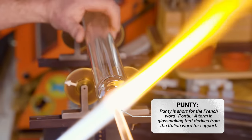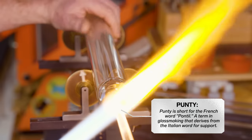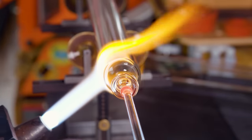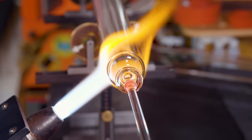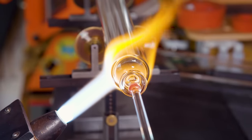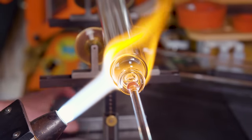The punty is just an attachment that's going to be removed at some point. It's made out of borosilicate rod because I want it to stick to the bubble that I want to help control. And then I blow and stretch and push and pull into the shape of the cup that I want.